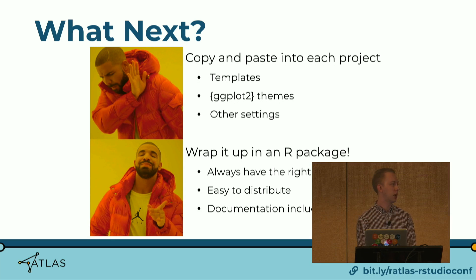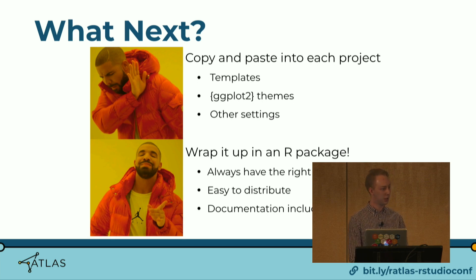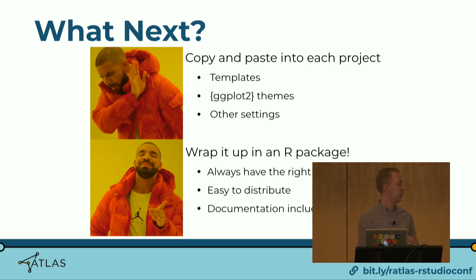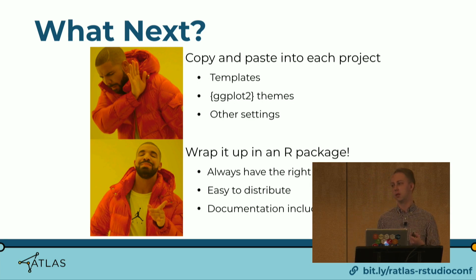So we have our templates and our ggplot themes — but what do you do with them? One option we tried was having everything live on a network drive, and that got messy very quickly. Every new project meant copying templates, ggplot theme code, and everything else; then if there's an update, you have to copy it into all projects — no one's sure which version is correct, and you end up with files called 'final' and 'final_final_2.' So instead, we wrapped everything into an R package. This ensures you're always using the correct version of the template, it's easy to distribute via GitHub, and you can include vignettes that document exactly how to write a report.